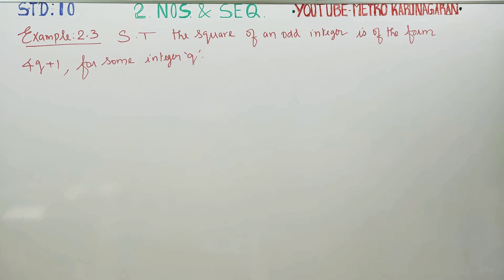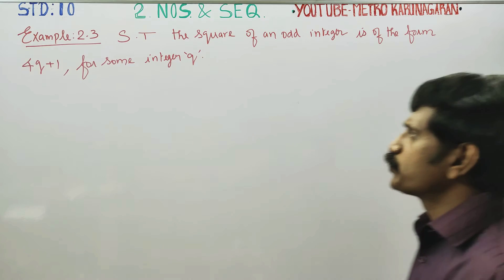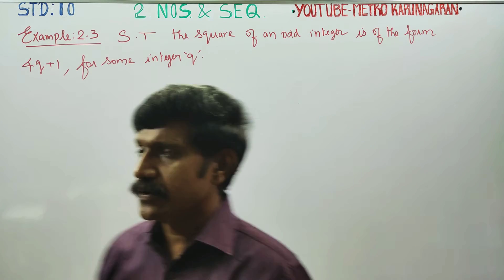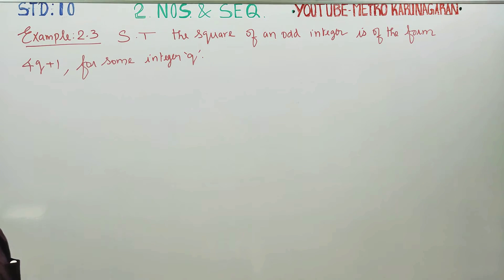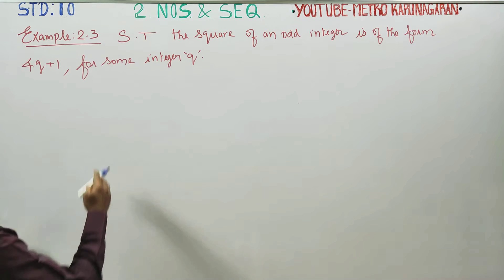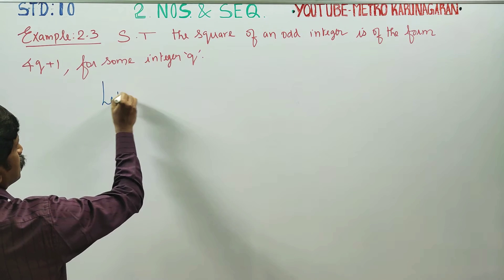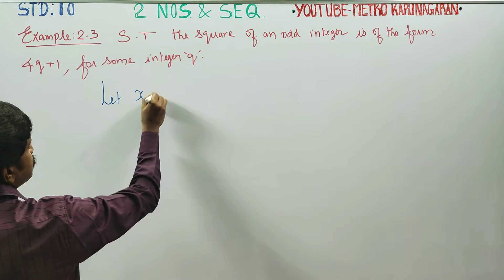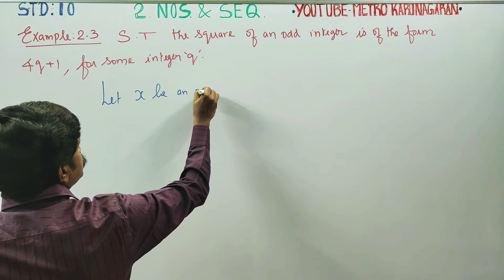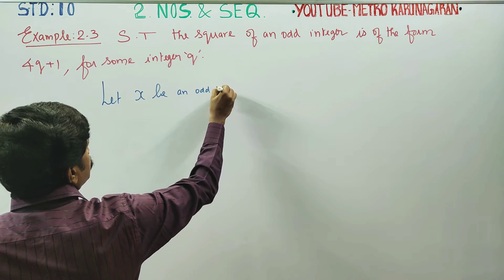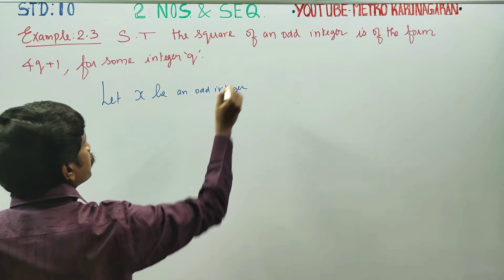Dear 10th standard students, I am Metro Karanagaran. In numbers and sequences, example 2.3, you have to show that the square of an odd integer is odd. Let x be an odd integer.